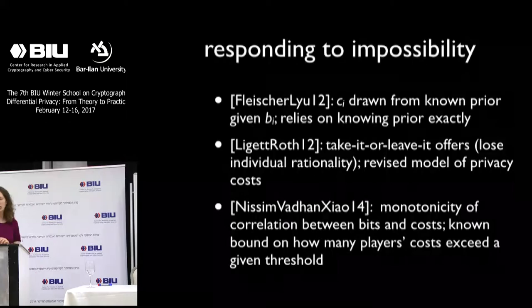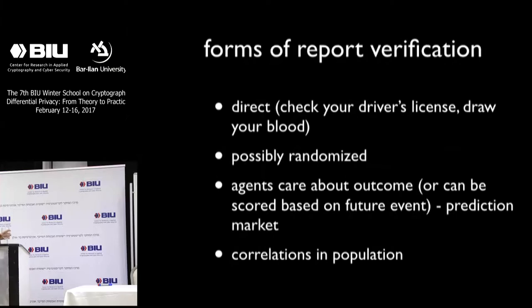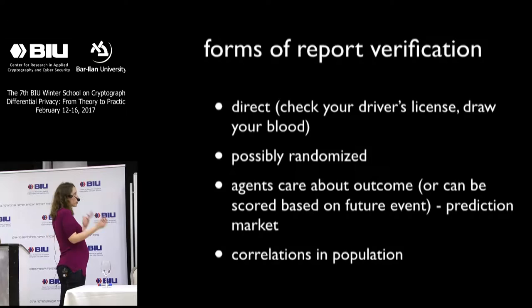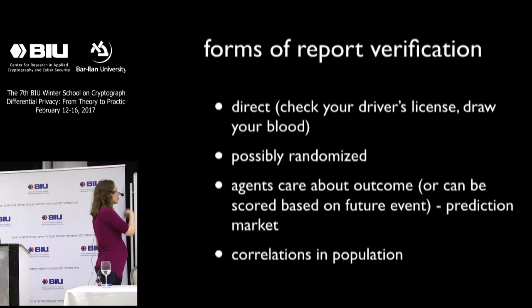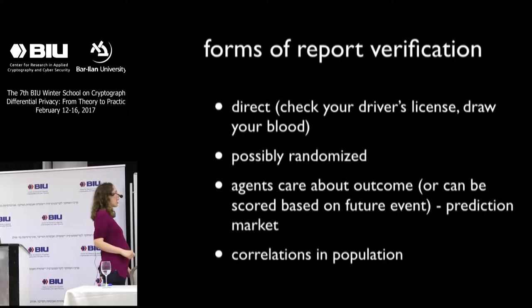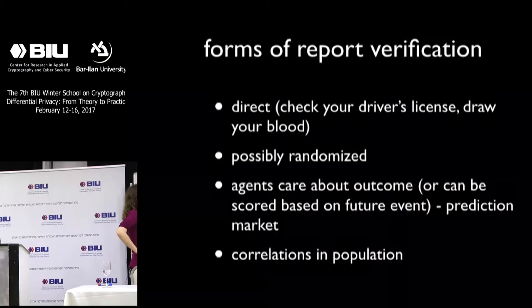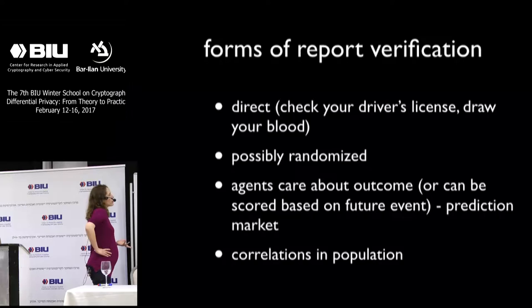Now I want to return, for most of the rest of the discussion, to this issue of verification, because I think it's a really fundamental one. There are lots of different ways we could think about verifying people's data. We could do it directly — check a driver's license or draw blood to see if someone has the disease they've claimed not to have. Maybe you can only do this for some people, but just the threat of it could be enough if you can penalize lying. It could be that agents actually care about the outcome of the mechanism, or they could be scored based on some observable future event — a proxy for verification, like a prediction market.